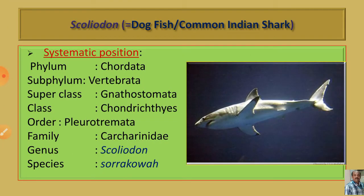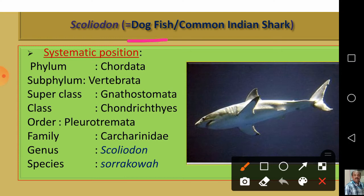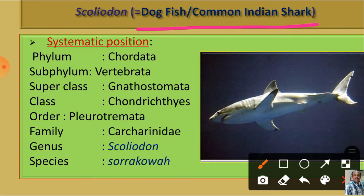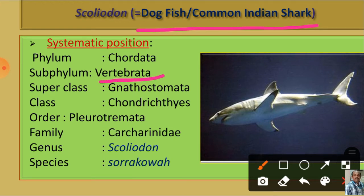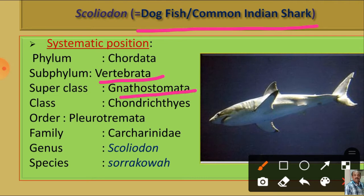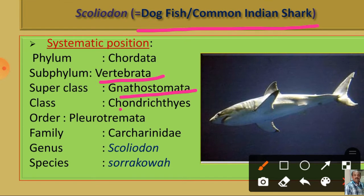Before going into the details of the scoliodon respiratory system, let us have a look at the systematic position of the scoliodon. Scoliodon is commonly called dogfish or common Indian shark. It belongs to the phylum Chordata because it has notochord, dorsal hollow central nerve cord, and gill slits. It belongs to the subphylum Vertebrata as its notochord is modified to become the vertebral column. It belongs to the superclass Gnathostomata as it possesses jaws.